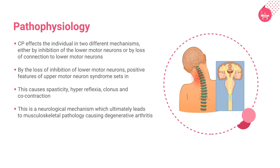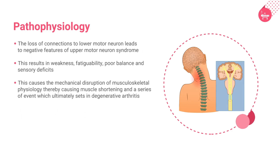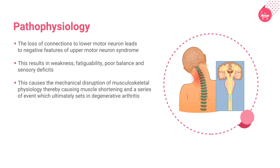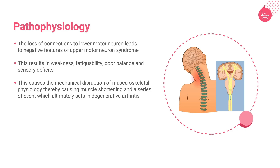This is a neurological mechanism which ultimately leads to musculoskeletal pathology, causing degenerative arthritis. By the loss of connections to lower motor neurons, negative features of upper motor neuron syndrome result in weakness, fatigability, poor balance and sensory deficits, which may cause mechanical disruption of musculoskeletal physiology, thereby causing muscle shortening and ultimately degenerative arthritis.